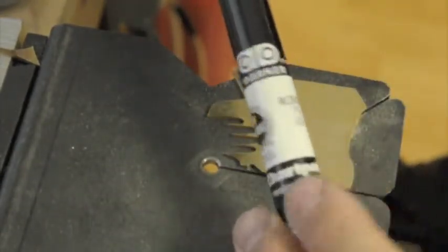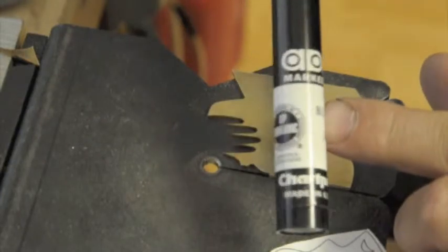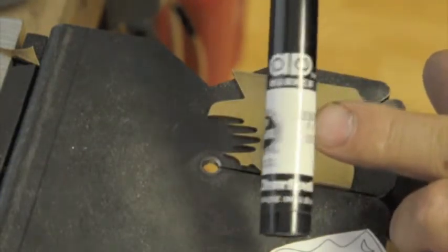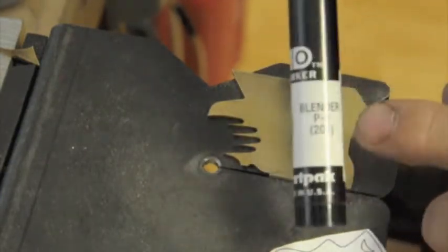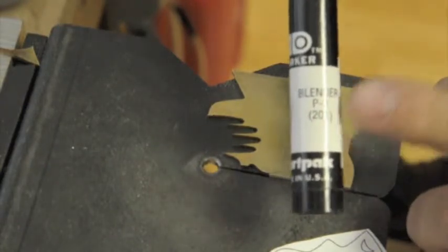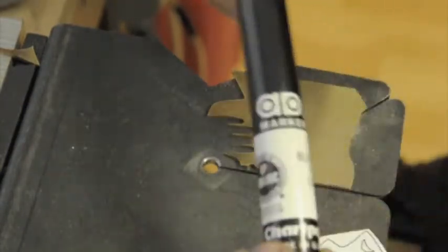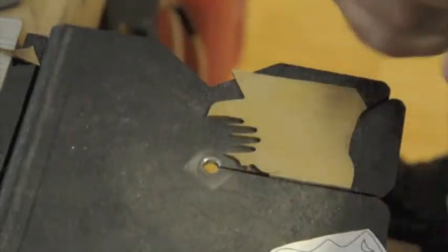I'll just do this on the back. I use this Chartpak, it's called a blender pen. In Vancouver, Canada, we get this at a place called Opus Art Crafts and Framing. You can probably get it in other places as well. The blender pen just has solvent in it.